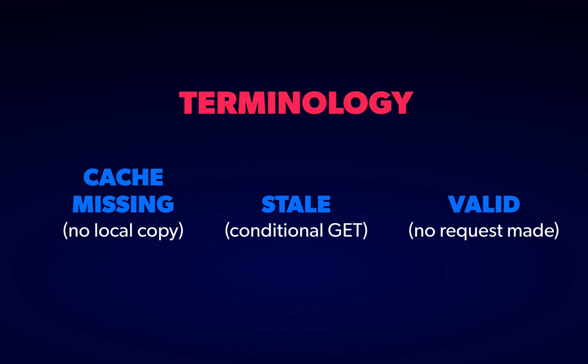To simplify things, I'm going to avoid using the HTTP terminology because it can be a bit unintuitive. For our purposes, there are really only three possibilities for each GET request that your browser needs to make. The first is cache missing, when the browser simply does not have a copy of the object in question. Conditional GETs equate to stale, where the browser has a copy but it's expired or otherwise needs revalidation. Finally, a valid cache means the browser doesn't have to make a request.